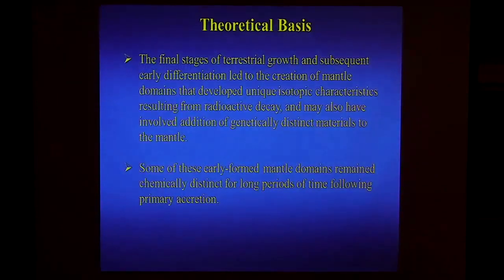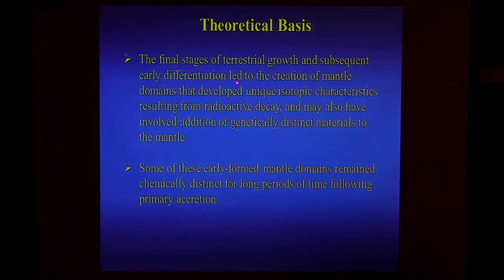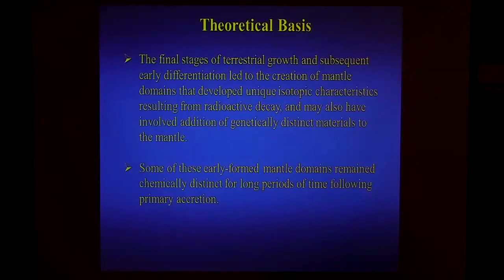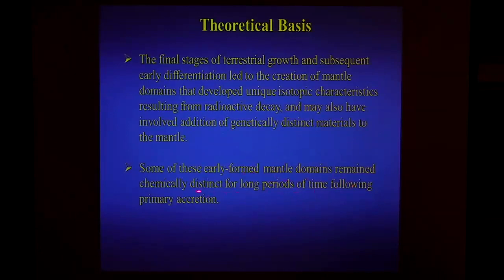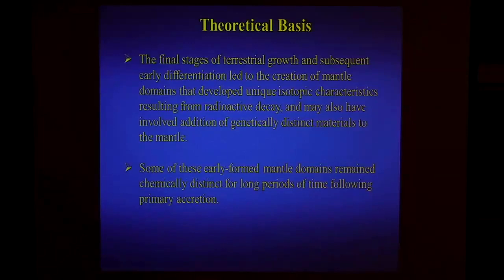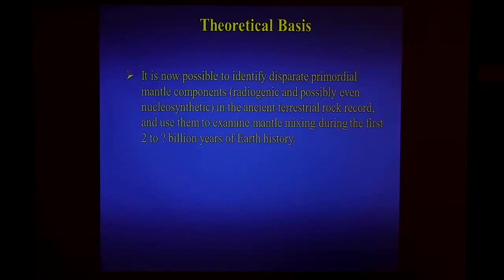Now we hop on a time machine and go further back in Earth history. The theoretical basis: the final stages of terrestrial growth and subsequent early differentiation led to the creation of mantle domains with unique isotopic characteristics as a consequence of radioactive decay. Some parts of the mantle may even reflect different genetics — genetically different material added during the final stages of accretion. Some early-formed mantle domains remained chemically distinct for long periods of time following primary accretion, setting up a good question for mantle dynamics. It is now possible to identify disparate primordial mantle components.